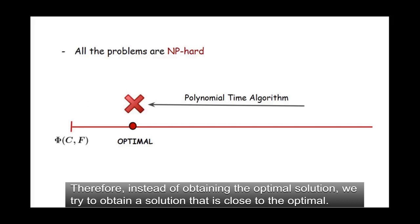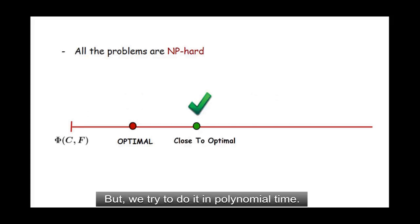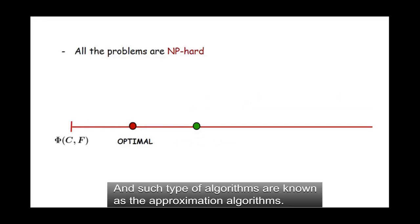Therefore, instead of obtaining the optimal solution, we try to obtain a solution that is close to the optimal. But we try to do it in polynomial time. And such type of algorithms are known as approximation algorithms.